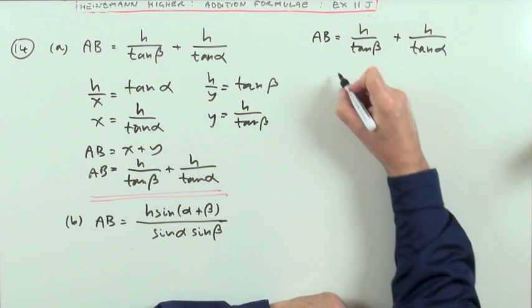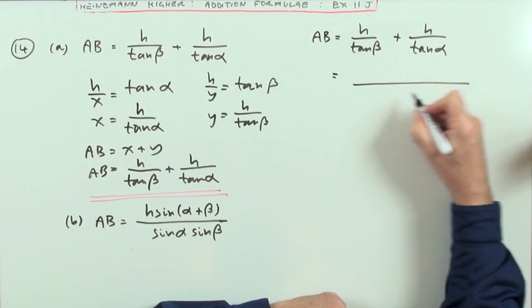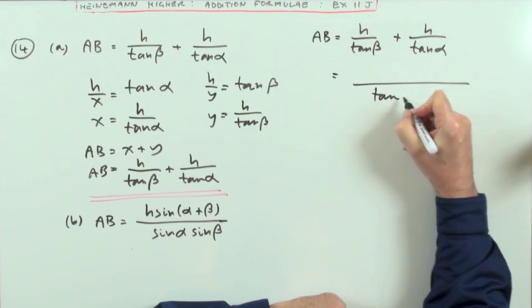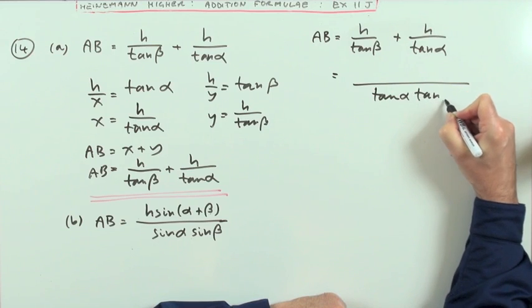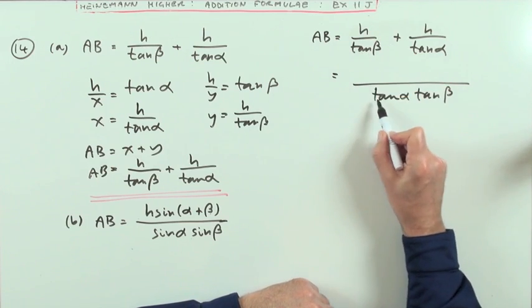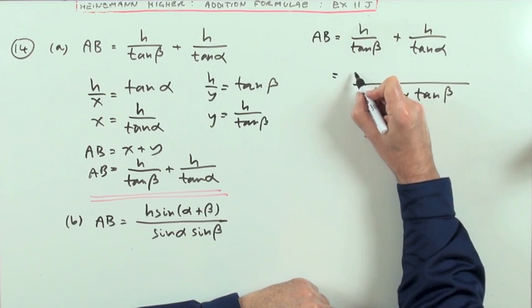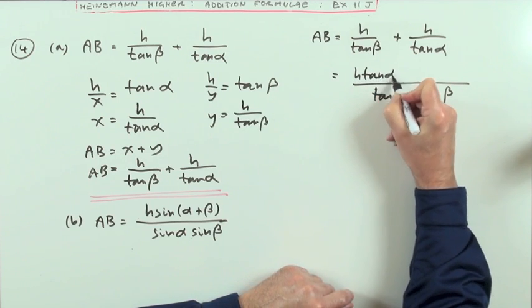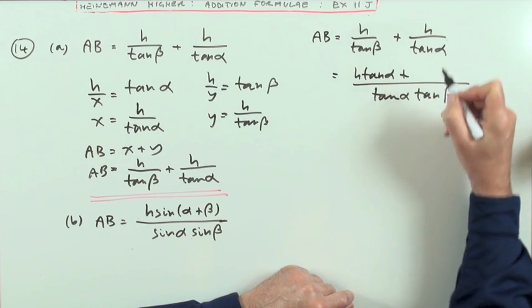Taking it to the top here, to get a single fraction: common denominator, multiply them together. I'll need to change the numerators to balance. I've got my tan beta, I need to multiply the top by tan alpha, so h tan alpha. I've got tan alpha, I need to multiply the top by tan beta, so h tan beta.